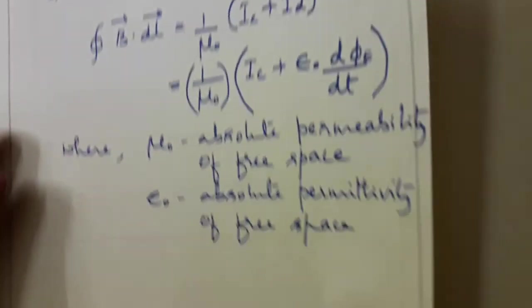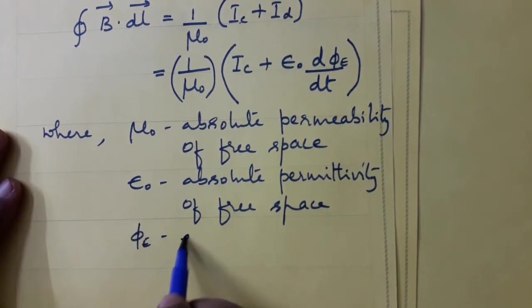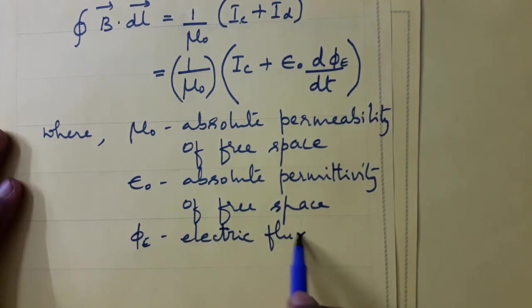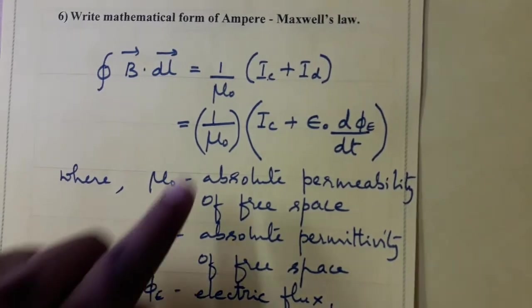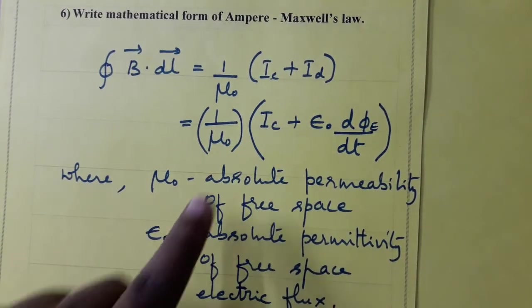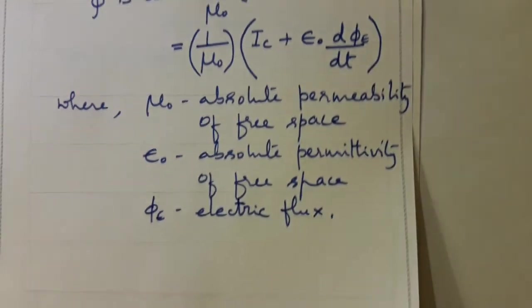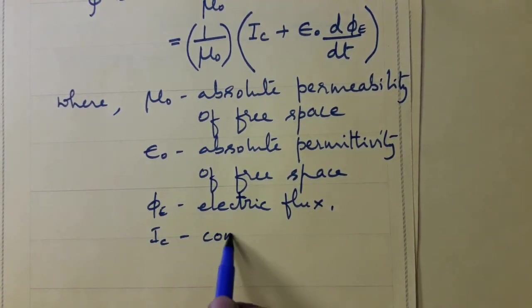Then, flux phi E is electric flux. These are the equations. These are the terms used. Of course, I c is conduction current.